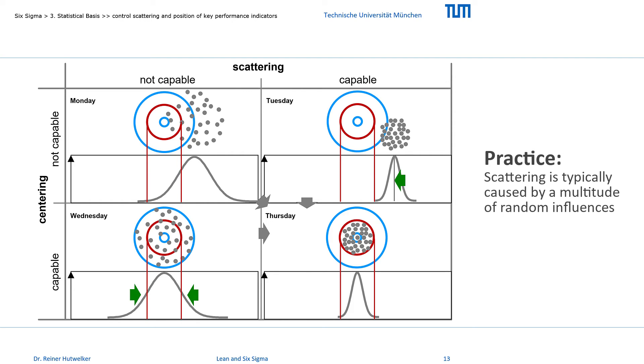Scattering, however, is almost always caused by an interaction of a multitude of influences. This is the basis for the normal distribution in many application areas. Think of the complex influences that for example determine the human body size. And it is not always easy to identify and control these influences. So, if we could choose a day, we would choose Tuesday. But we cannot do that in practice.